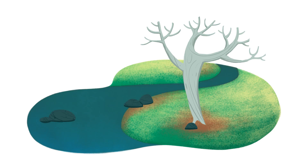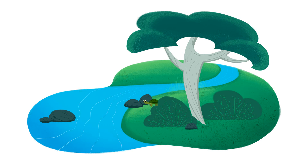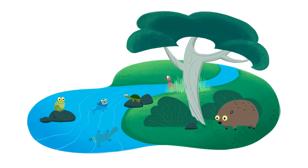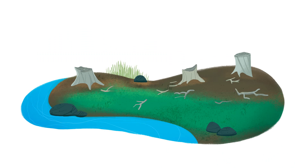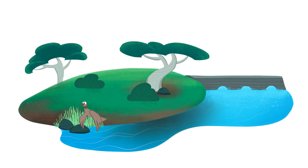Blackwater is usually short term, and in the long term the organic matter benefits the river by replenishing its food source. Extreme weather, land use and river operations can contribute to blackwater events.